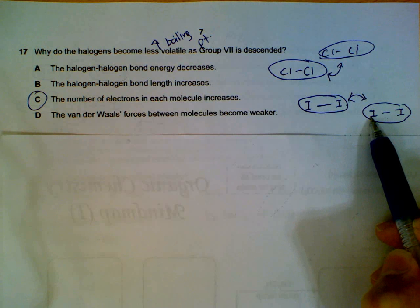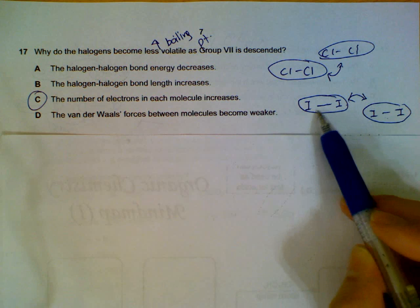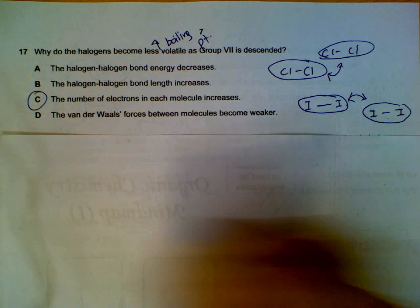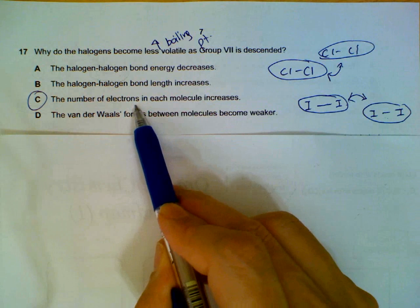This increases when we have more electrons which will be more easily distorted, or the electron cloud more easily distorted. We will have stronger instantaneous and induced dipole. So the more electrons you have, the stronger your Van der Waals forces.